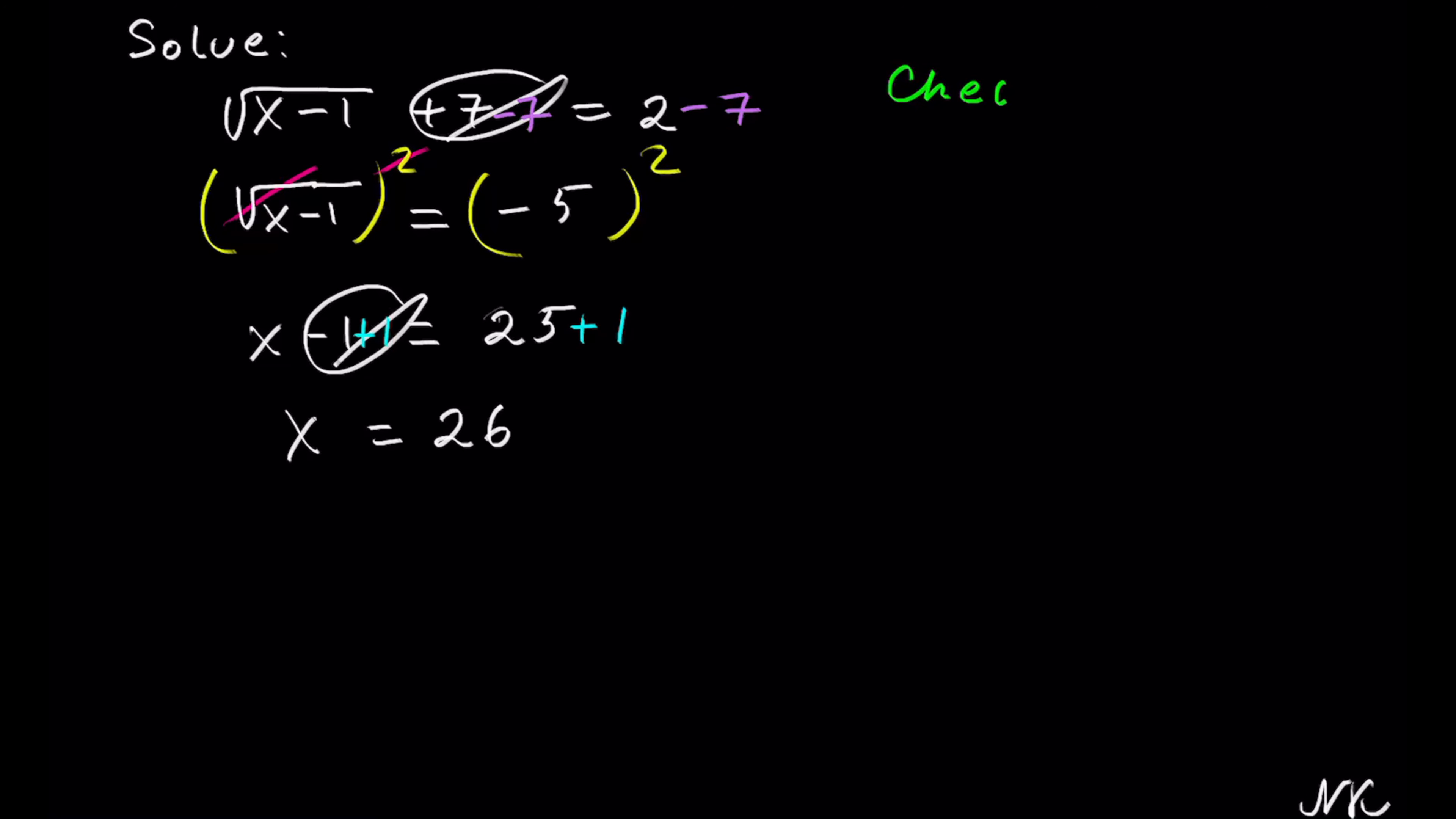So let's check x equals 26 by plugging it into the original equation of square root of x minus 1 plus 7 equals 2. Instead of x, we plug in 26, so we have square root of 26 minus 1 plus 7 equals 2.